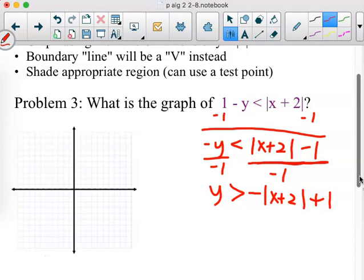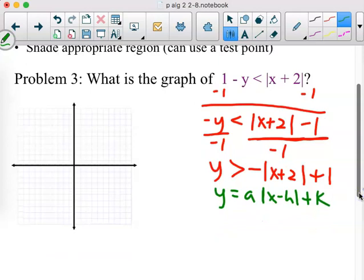So Y is greater than. It will be negative absolute value of X plus 2 plus 1. Everything over on the left-hand side has to be divided by that negative 1. Now we're rolling. So I go ahead and put my Y equals A absolute value of X minus H plus K either right above it or below it. So I want my vertex. And I know it's HK. So what would it be? Negative 2, 1. X's are always opposite. So that's where I start. I go to my vertex at negative 2, left 2, and up 1.